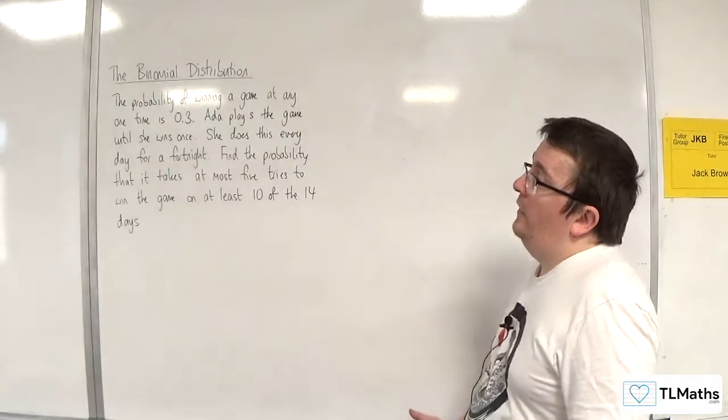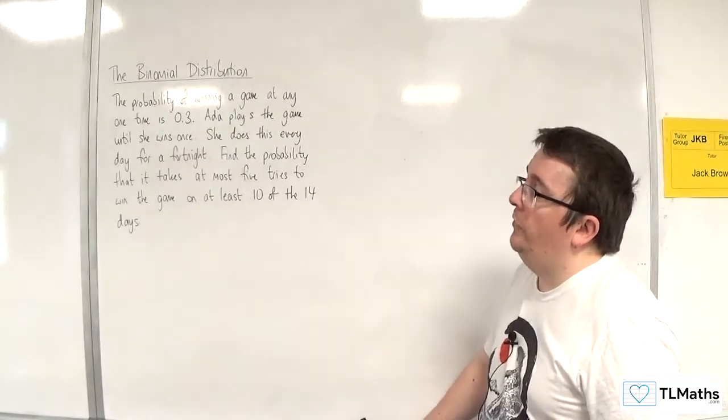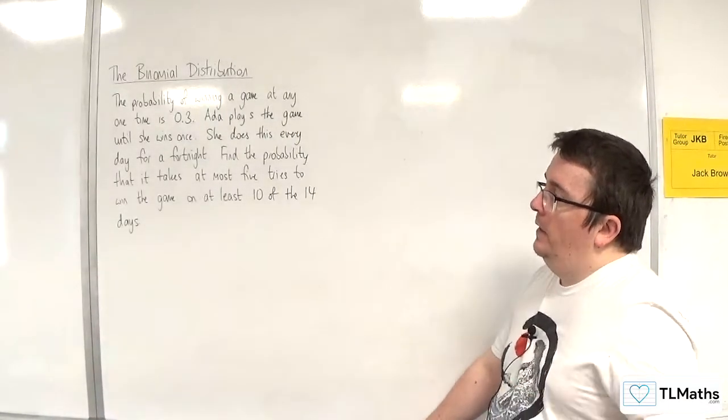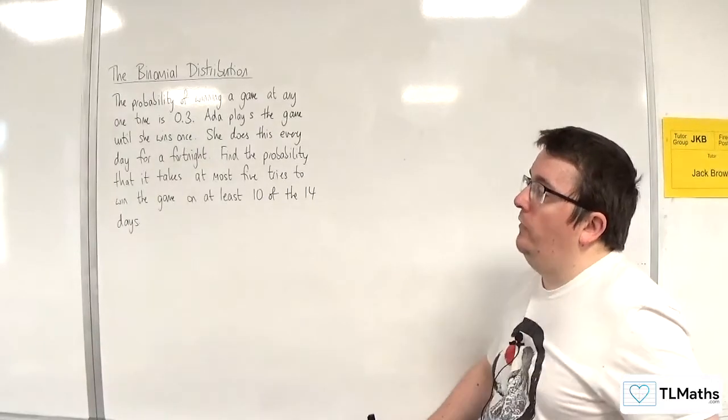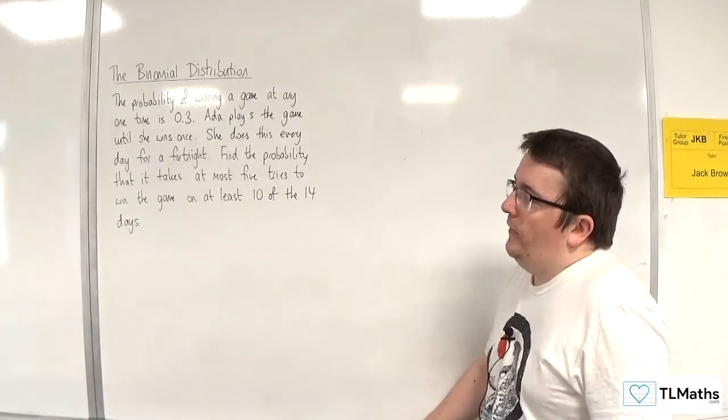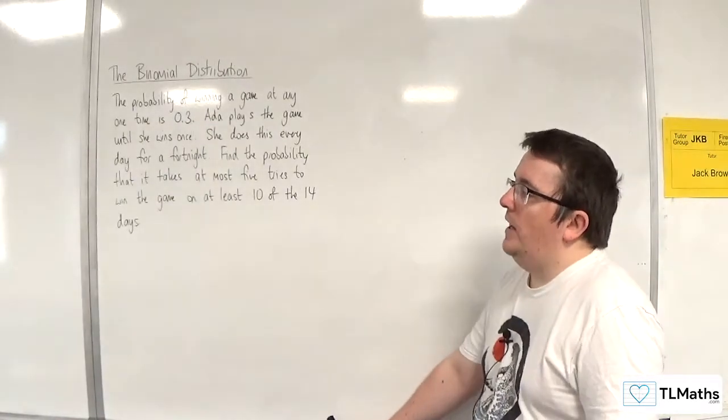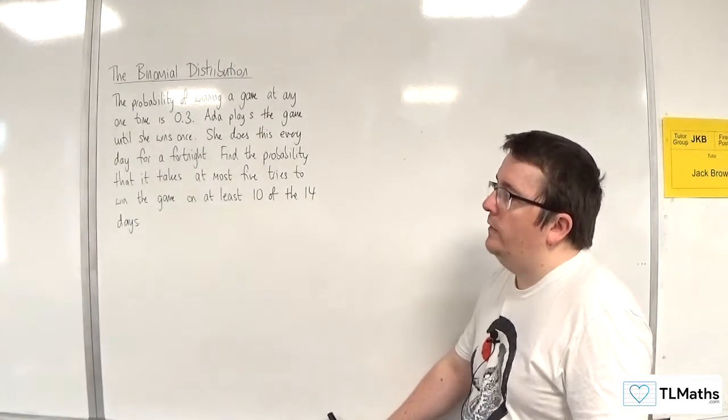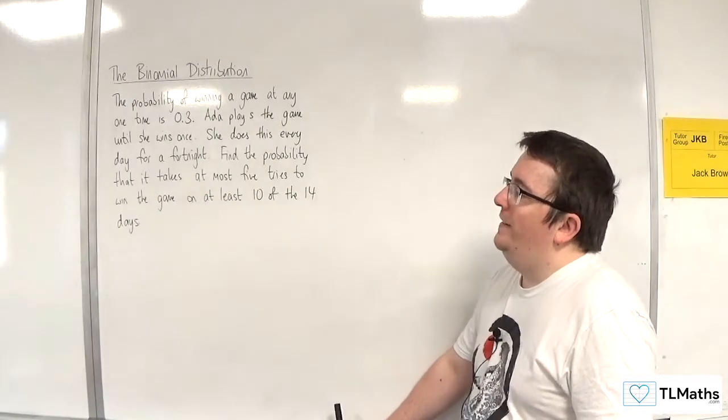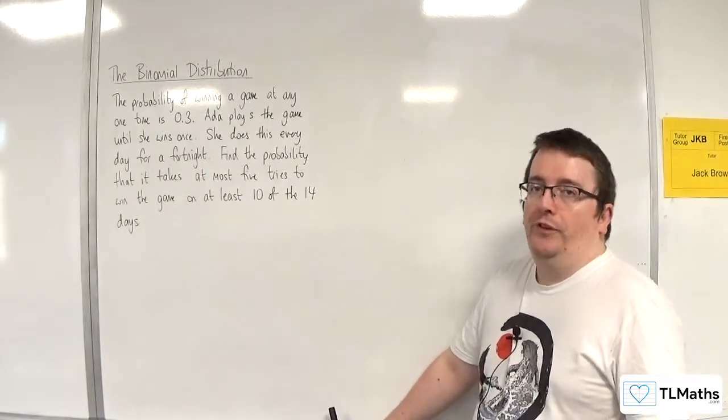In this problem, the probability of winning a game at any one time is 0.3. Ada plays the game until she wins once. She does this every day for a fortnight. Find the probability that it takes at most five tries to win the game on at least 10 of the 14 days.